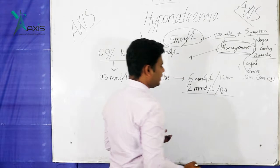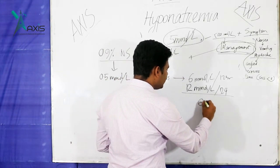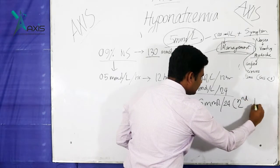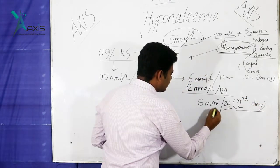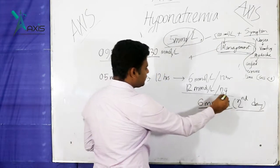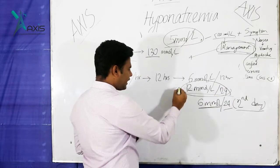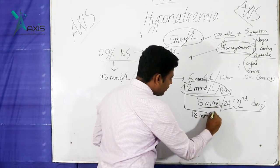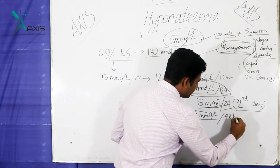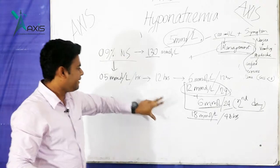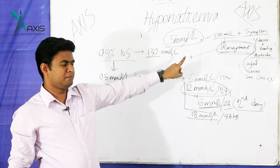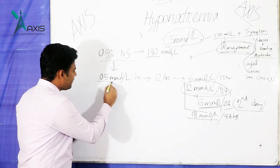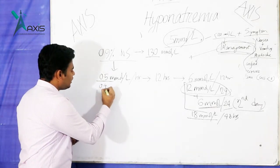On the second 24-hour period (day two), the maximum correction is 6 mmol per litre per 24 hours. So over 48 hours total: 12 mmol on day one plus 6 mmol on day two equals a maximum of 18 mmol per litre per 48 hours. This is the maximum correction formula to prevent osmotic demyelination syndrome.